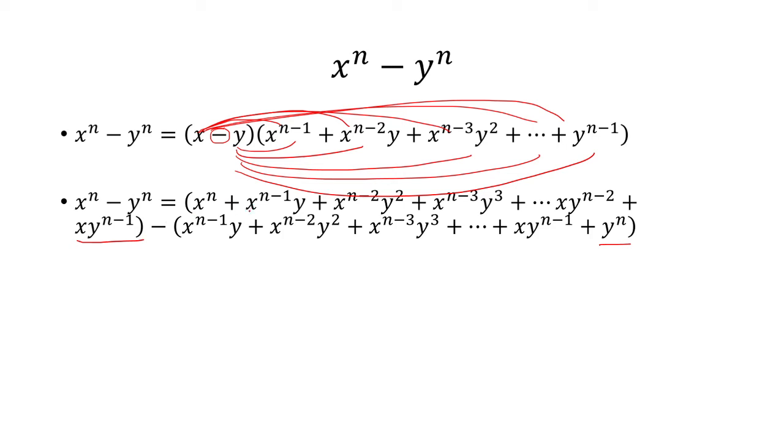Like, for example, x to the n minus 1 times y will cancel with this one because there's a minus outside. x to the n minus 2 times y squared will cancel. Same thing with x to the n minus 3, y cubed. That's going to cancel. So everything's going to cancel.